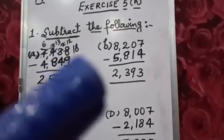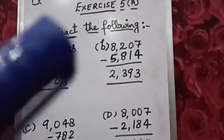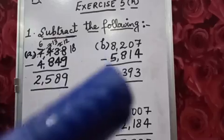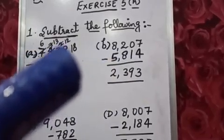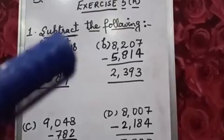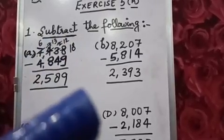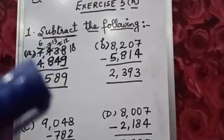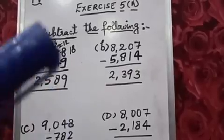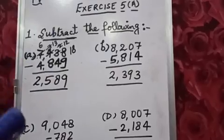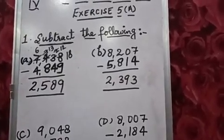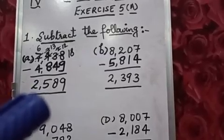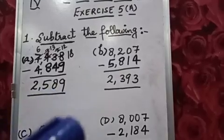Students, we only take borrow when we need it. We can't minus a larger number from a smaller number. But like here we can minus 4 from 6, so there is no need of taking borrow. So what we will get? 2,589.